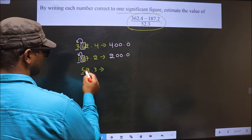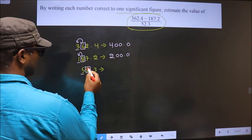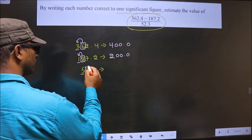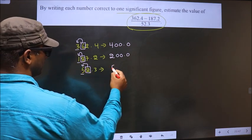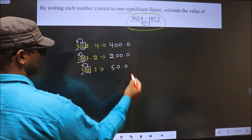Now here, this is first, this is second significant number which is 2. Smaller than 5, so we do not need to add any number to this, it will remain 5. And 0 in rest of the place.